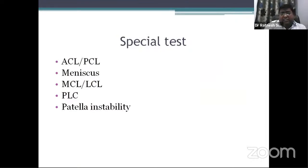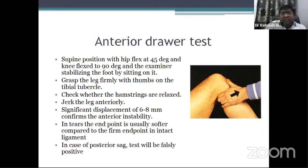Special tests are done to check the integrity of ACL, PCL, meniscus, MCL, LCL, PLC, or patellar instability. The anterior drawer test checks ACL integrity. In supine position with hip flexed at 45 degrees and knee flexed at 90 degrees, the examiner stabilizes the foot by sitting on it. Grasp the leg firmly with thumbs on the tibial tubercle, ensure hamstrings are relaxed, then jerk the leg anteriorly. Significant displacement of 6 to 8 mm confirms anterior instability. In tears, the end point is usually soft compared to the firm end point of an intact ligament. However, in posterior sag, the test will be falsely positive.